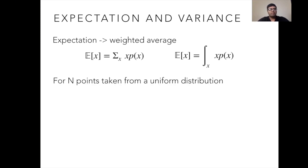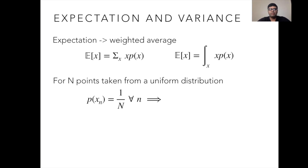Suppose you have n points taken from a uniform distribution. Uniform distribution is a distribution where the probability of each point in the sample space is equal — a common example is rolling a dice, where you have six possible outcomes, all equally probable. So the probability of xn equals 1/n. If you plug in p(xn) = 1/n into the formula, you get that the expected value is simply the average value of the distribution. In case of Gaussian distribution, this is the weighted average because all probabilities are not the same. This is a measure of centrality of the distribution.